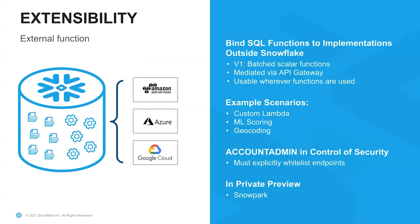Extensibility — you can have external functions running across these different cloud providers. An example use case would be doing translations. So if you have a table of data and you want to translate English sentences to Spanish, you can execute that statement in SQL, have it execute this external function and pass this data along, and it will return the Spanish translation of your data. What's cool about that is it's able to leverage the processing engine of Snowflake — so if you're doing filtering and aggregated analysis in addition to the translation, you can leverage the query optimizations that Snowflake has, all at the same time.